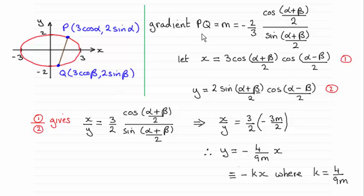Well, given that the gradient of PQ is M, in the first part of the question, part A, I showed you that M, that gradient, was given by this result.